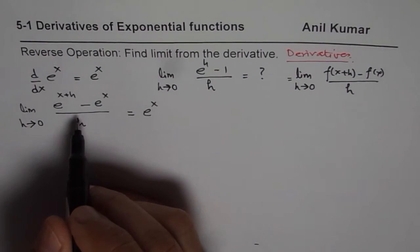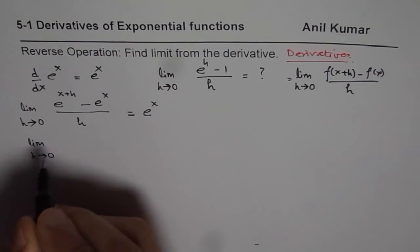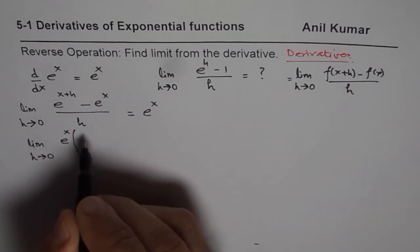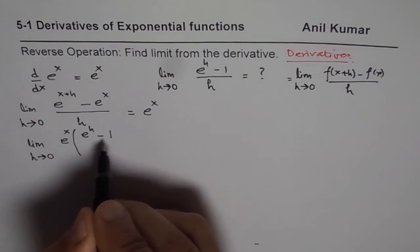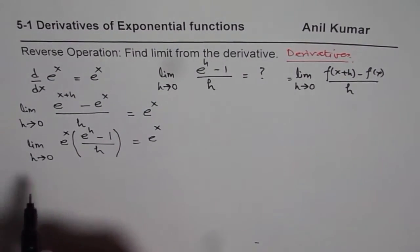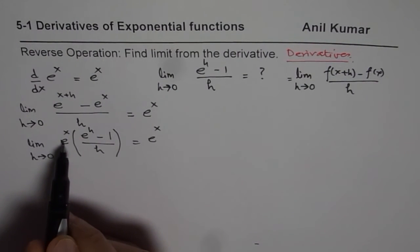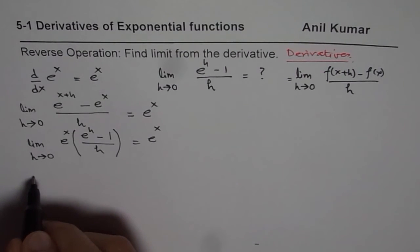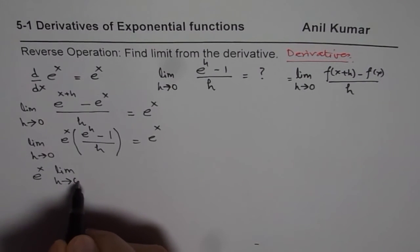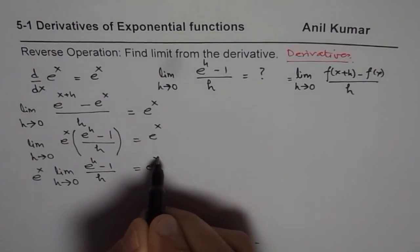From the left side, we can take e to the power of x as a common factor. So we get the limit as h approaches 0 of e to the power of x times e to the power of h minus 1 over h, and we know this equals e to the power of x. Since e to the power of x is independent of h, we can factor it out, giving us e to the power of x times the limit as h approaches 0 of e to the power of h minus 1 over h, equal to e to the power of x.